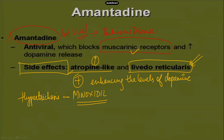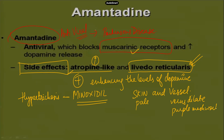Livedo reticularis is not a life-threatening condition but affects both the skin and vessels. The livedo component makes the skin look extremely pale, while the reticularis component means the veins dilate and form a purple meshwork underneath the skin. This is characteristically associated with amantadine. With this last drug, we conclude the chapter on drugs for Parkinson's disease.